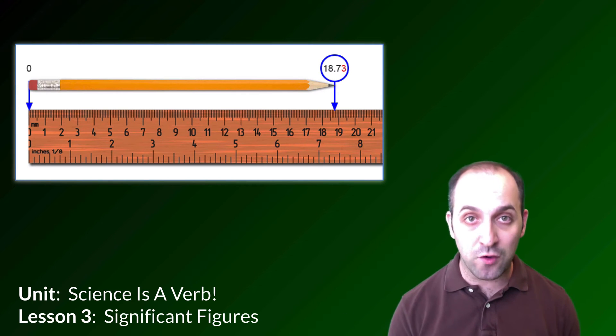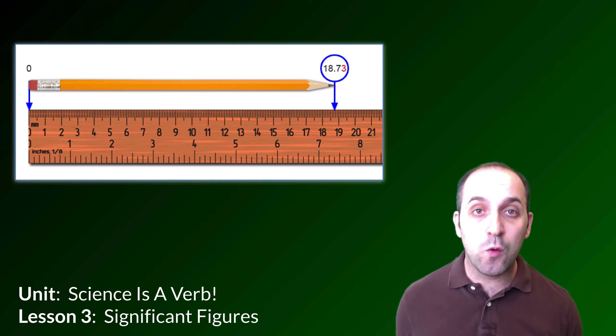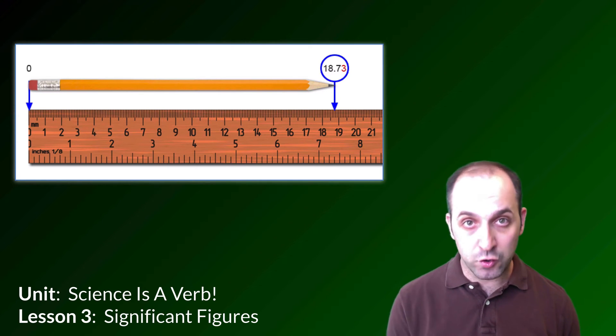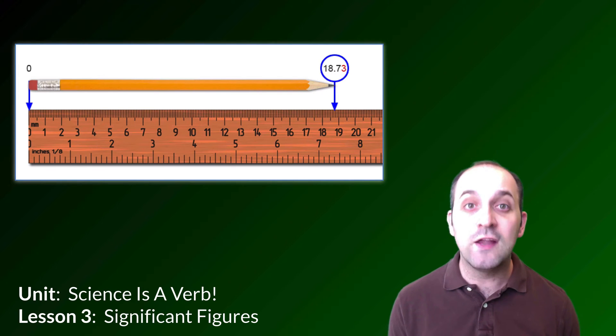because this ruler doesn't allow anybody to make that kind of measurement with any degree of certainty. That's what significant figures enable us to do. They are the numbers that we know with certainty in a particular measurement. So let's talk about them, and we'll try practicing with a couple of examples here in this lesson.